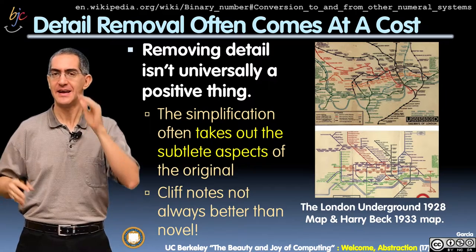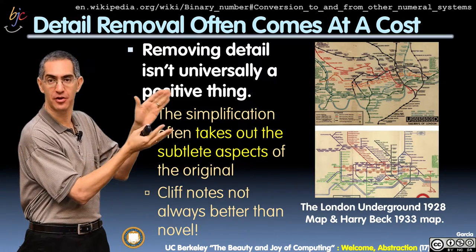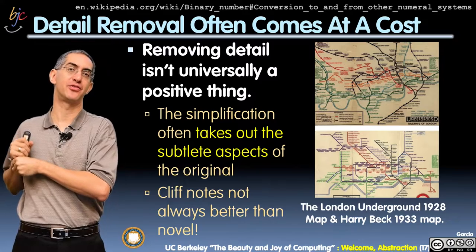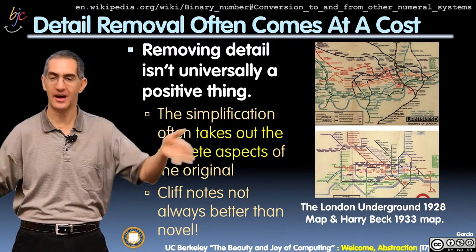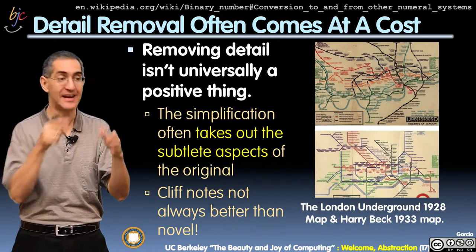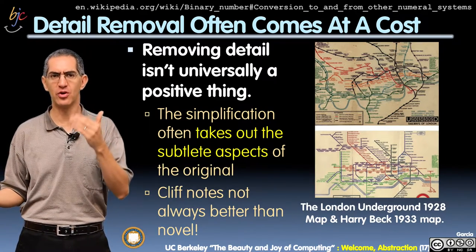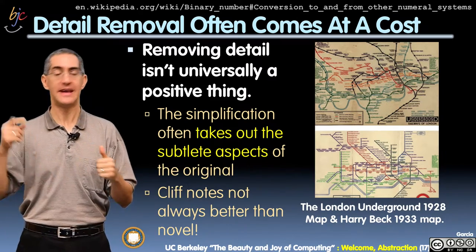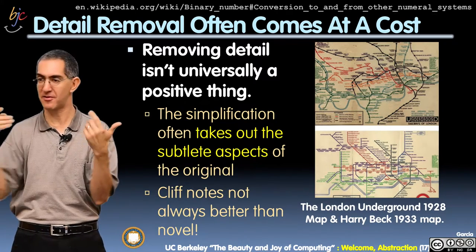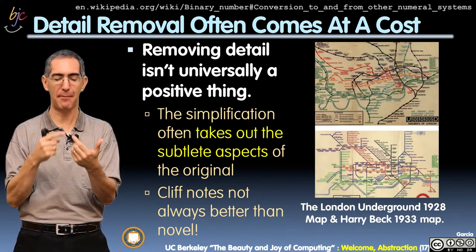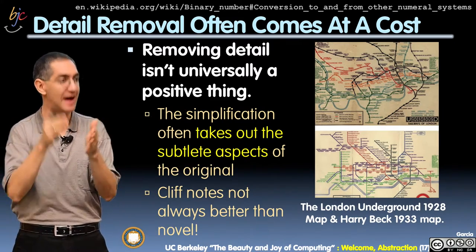Abstraction is not perfect — detail removal has a cost. Take the example of the map of London's Underground redesigned by Harry Beck in 1933. He straightened out all the roads, removed geographic detail, and made the stops all evenly spaced — when in fact the stops are not evenly spaced. If you treat that map as ground truth, you might count 30 stops, assume they're all equal time apart, take a 29-minute nap, and wake up having missed your stop because the spacing was actually compressed.